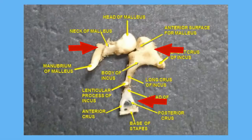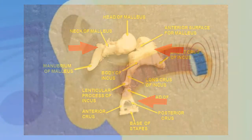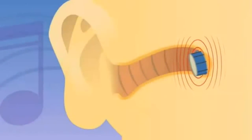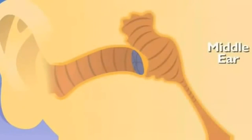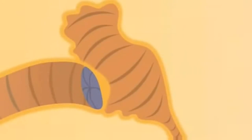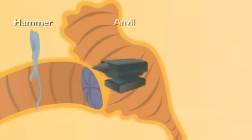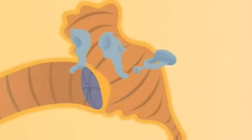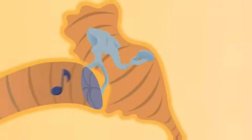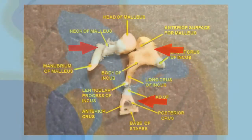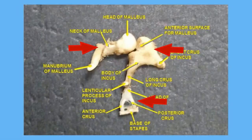The hammer passes the vibration to the anvil, and the anvil passes this to the stirrup. The stirrup vibrates against a thin membrane that covers the opening to the inner ear.